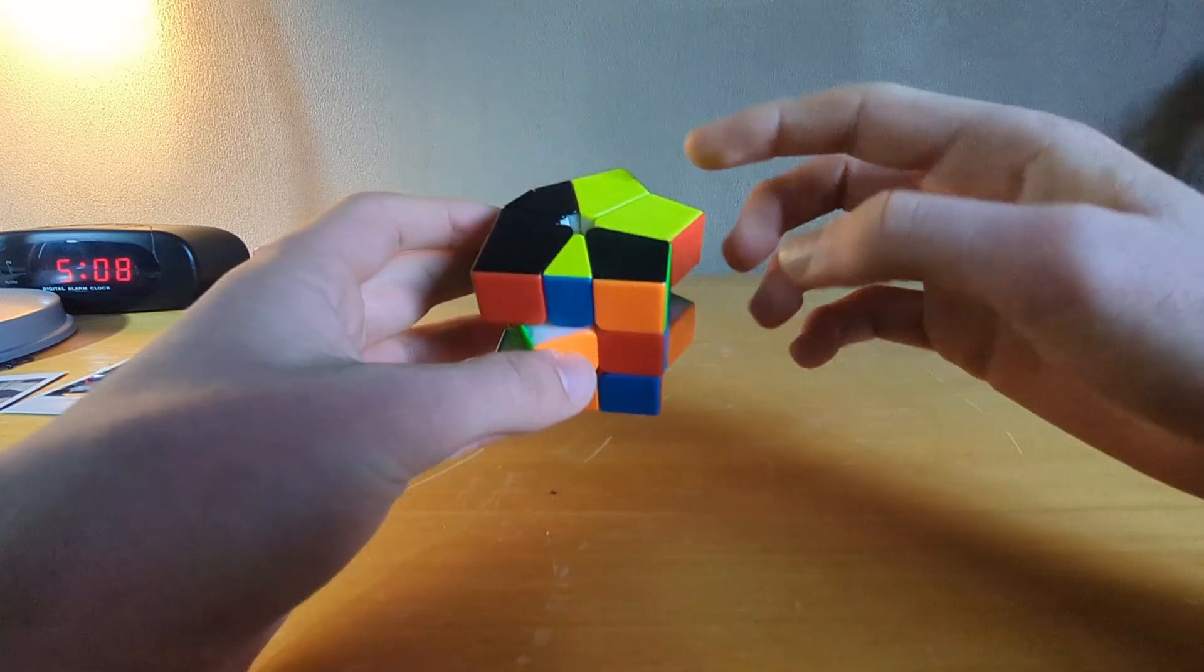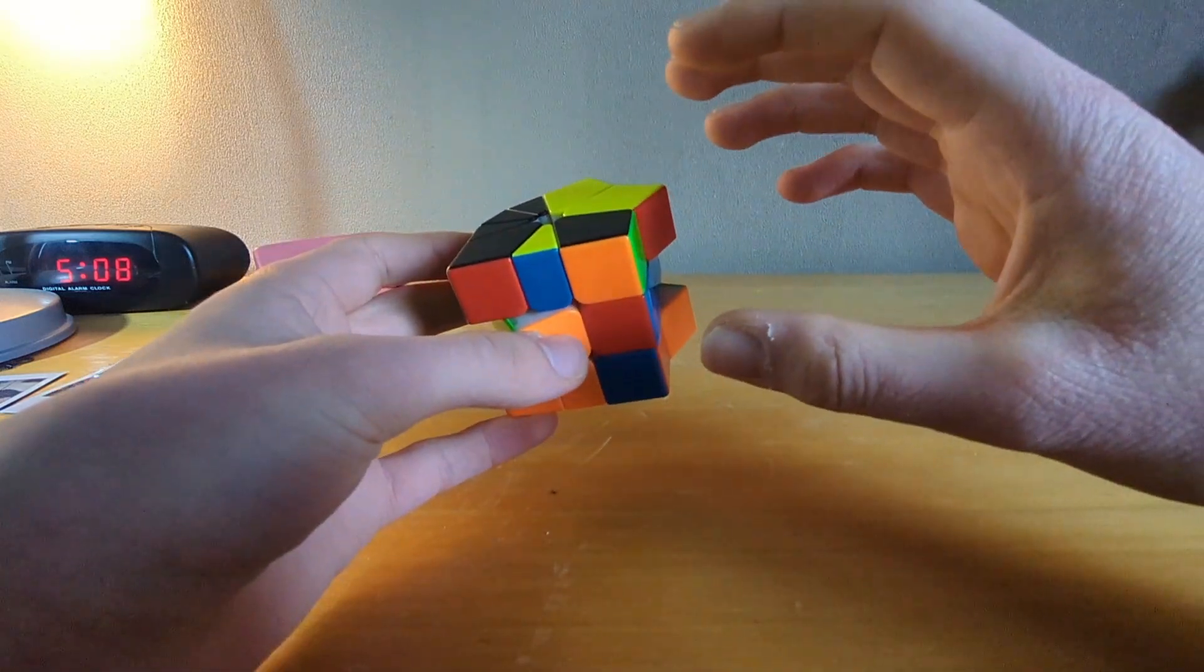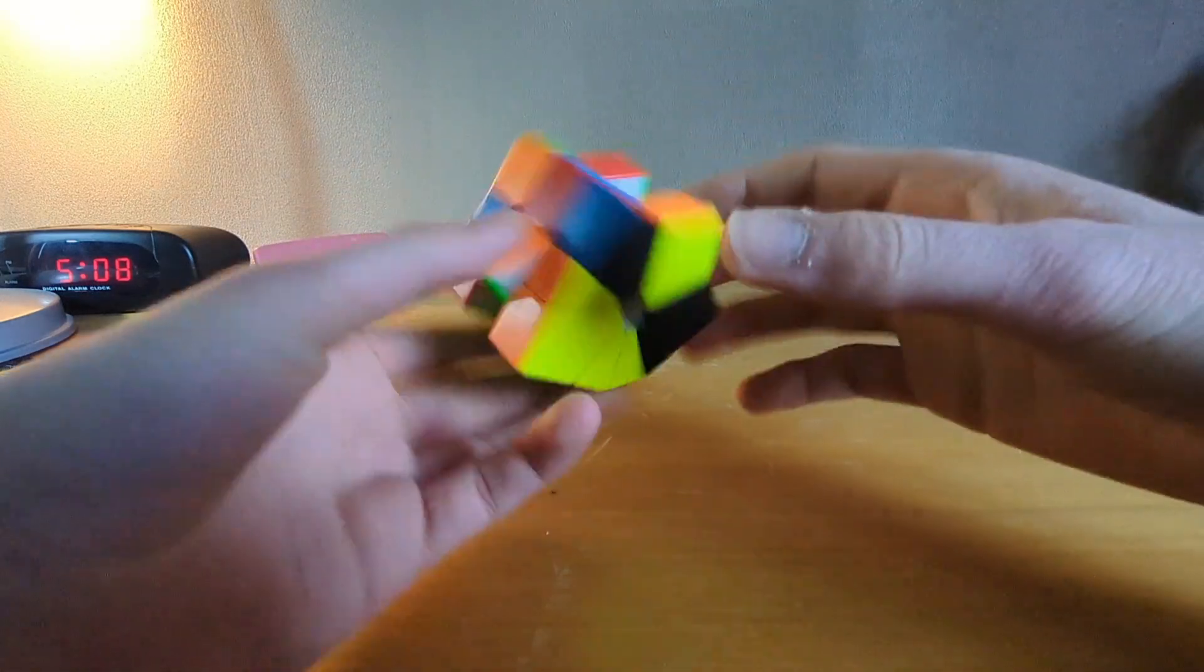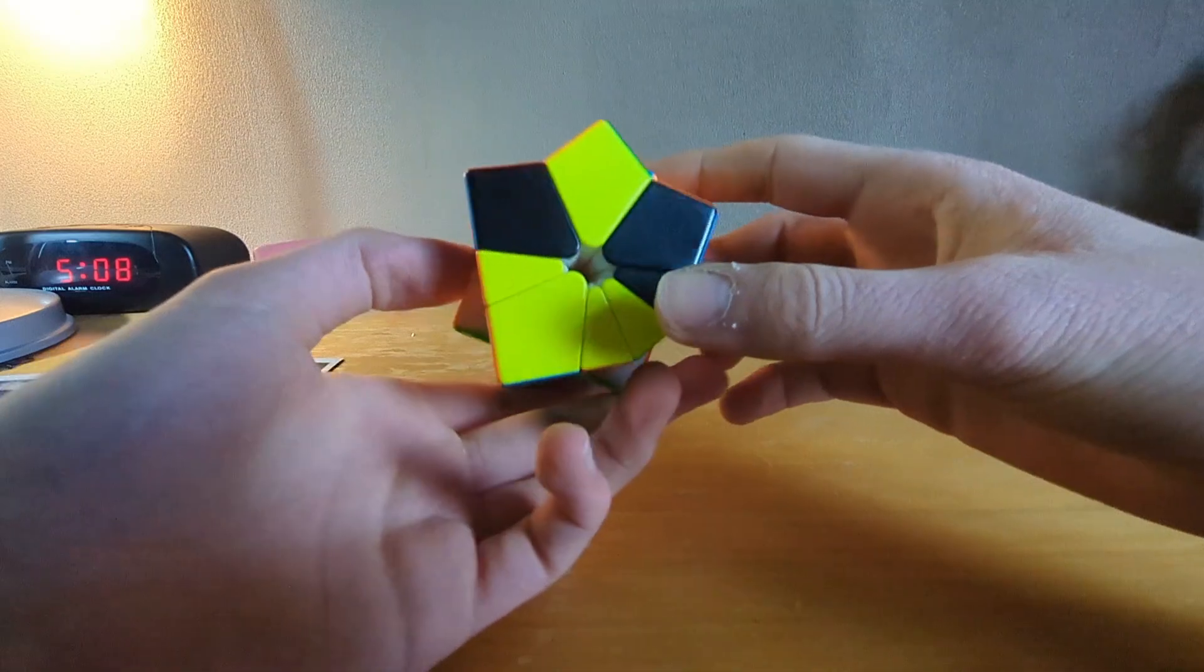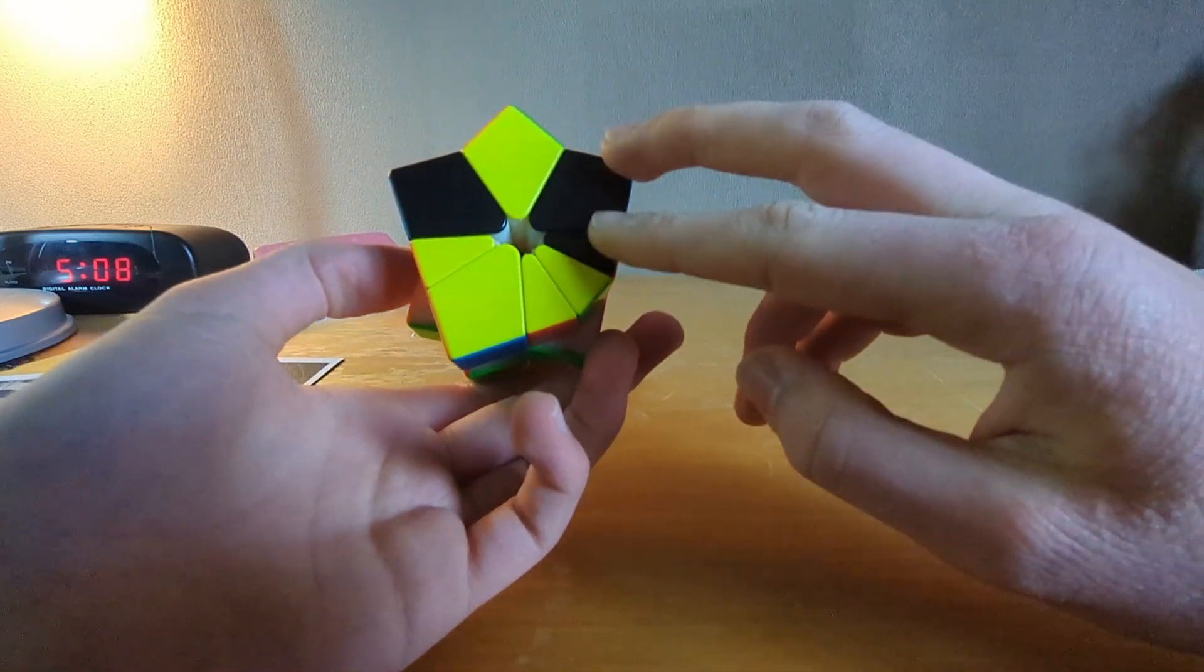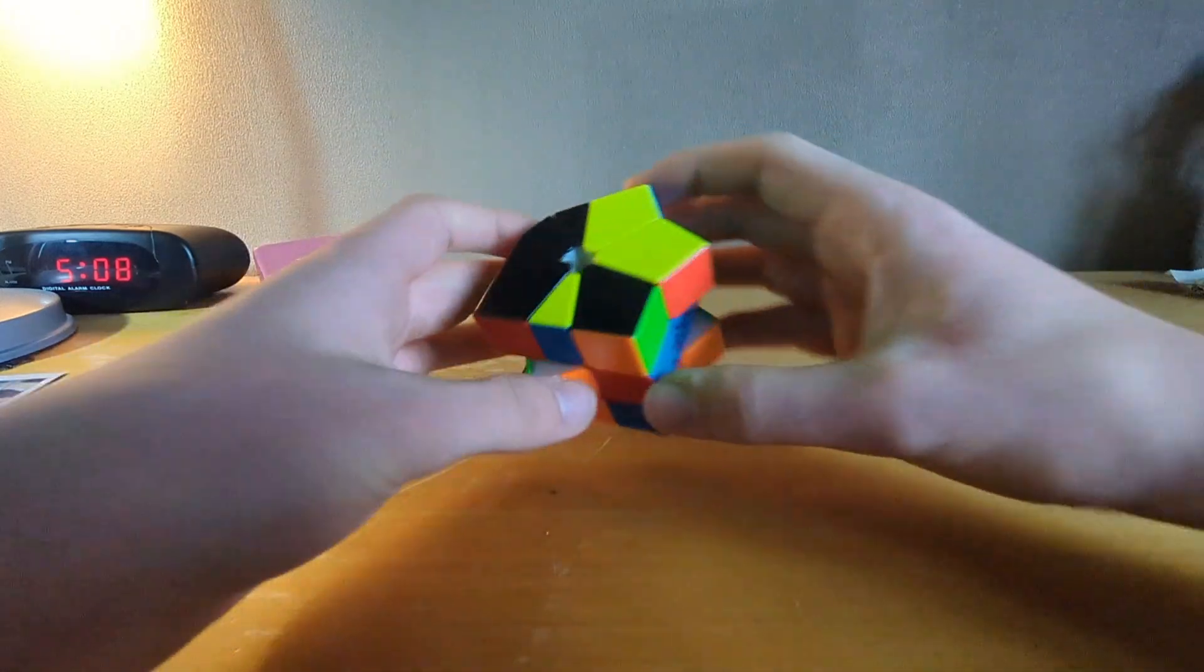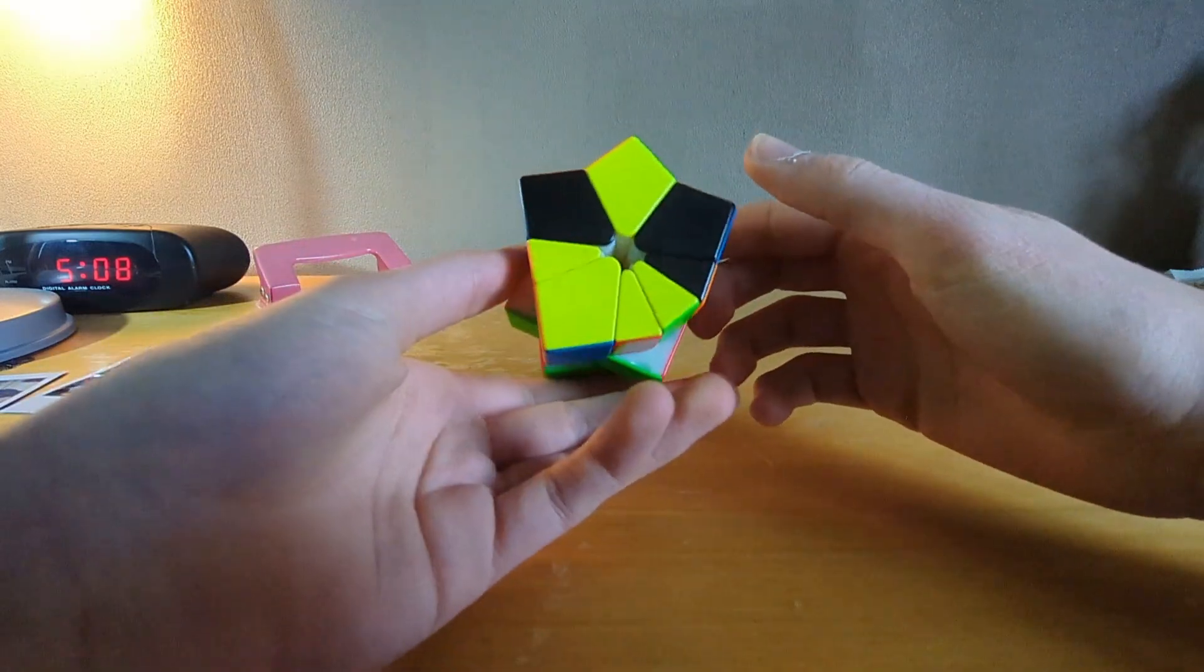And then I can just do a U prime and then just do it really easily. I'm also watching where these orange pieces are going to go because I'm trying to do some more second block prediction.